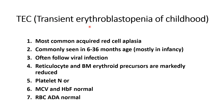In transient erythroblastopenia of childhood (TEC), it is the most common acquired red cell aplasia, commonly seen in 6 to 36 months of age, but can also present between 3 to 6 months. It often follows a viral infection and is a transient condition. Reticulocyte counts and bone marrow erythroid precursors are markedly reduced. Platelets remain normal, MCV and hemoglobin F are normal — it is a normocytic anemia — and RBC-ADA activity is also normal.